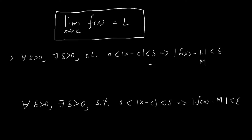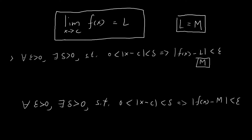So what I'm going to do in this video is show you that if there does indeed exist a number m that also satisfies this definition, then it must be the case that L is equal to M. In other words, the limit L has to be unique. This is what I'm going to prove in this video.